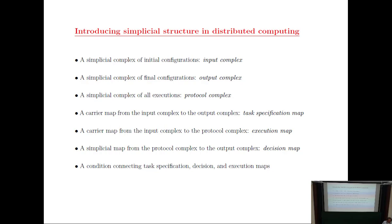For example, in binary consensus with N processes each taking value zero or one, with no restrictions, you'll just have a simplicial sphere as the input complex. The second important part of a distributed task is the set of allowed final configurations — the output complex. In complete consensus, the output complex consists of just two simplices: everybody decides zero, or everybody decides one. But you could imagine more interesting restrictions — for instance, starting with 100 processes, you want the total set of values chosen to be at most 99, which actually turns out to be unsolvable. The output complex in that case would be the skeleton of a simplex.